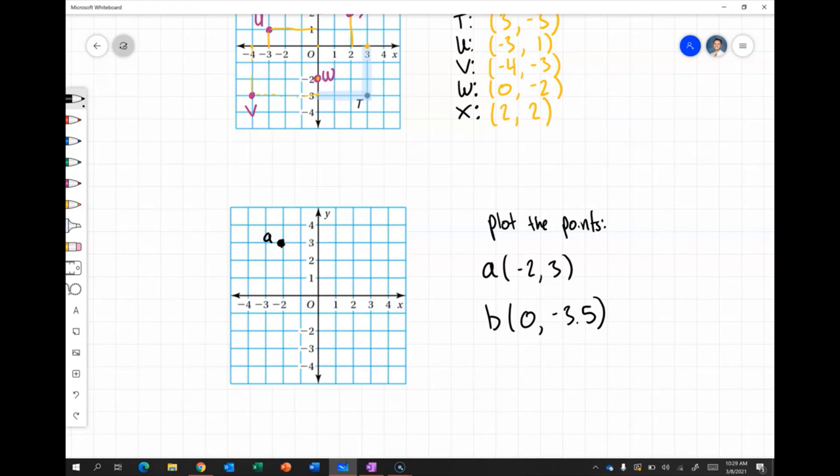Okay, then we've got point B, which is going to be at 0 on the x-axis. That's my origin, right in the middle, the intersection of all of these. And negative 3.5. So negative 3.5 isn't labeled on my graph, but I know that that'll be halfway between negative 3 and negative 4. So once again, I know that my x is at 0. So that's right here. And then I will follow that down. Again, I'll use a highlighter to show you. I'll follow that down until negative 3.5. So that's where my point B would go.